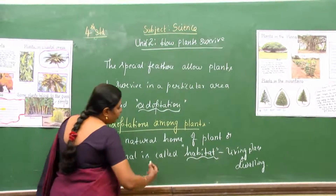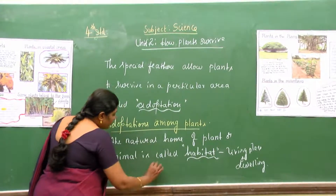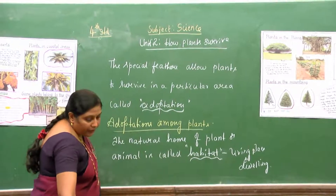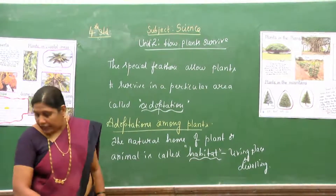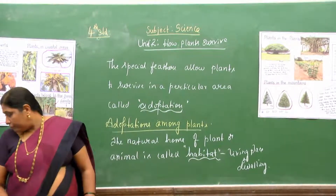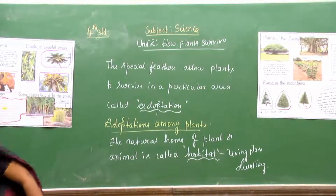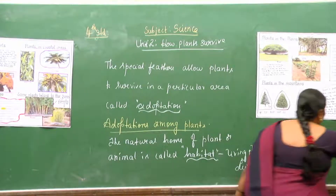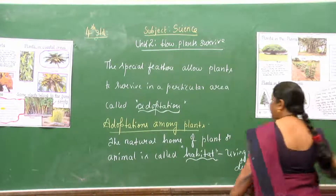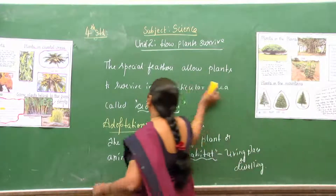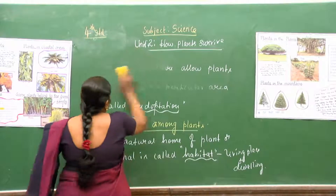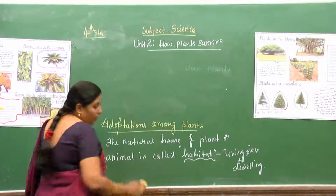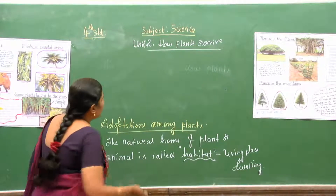The plants, based on their habitats, are divided into two groups: one is terrestrial plants and the other is aquatic plants.